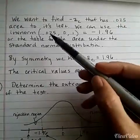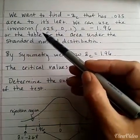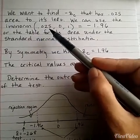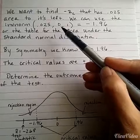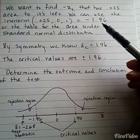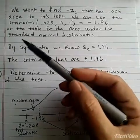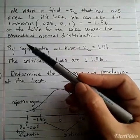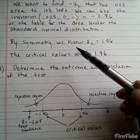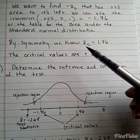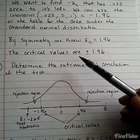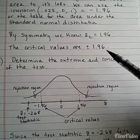We can use the function on the TI called inverse norm. When we use this feature, we would type in 0.025 for the area to the left of this Z, along with 0 and 1, and this will equal negative 1.96. Or you can use the table that has the area under the standard normal distribution. By symmetry, we know that the positive critical value will be positive 1.96. Therefore, the two critical values are going to be plus and minus 1.96.